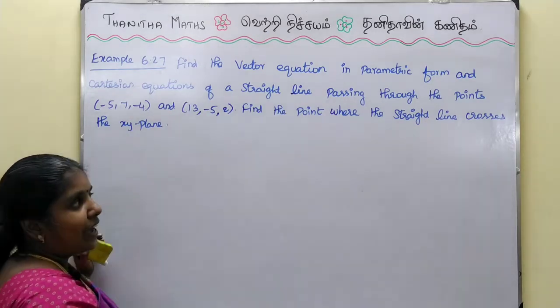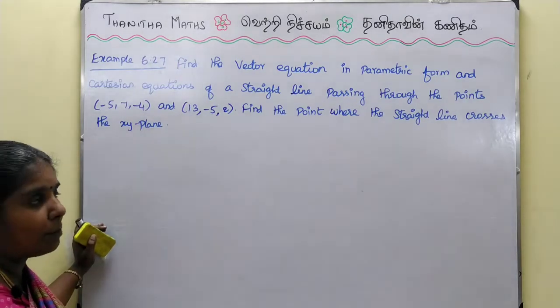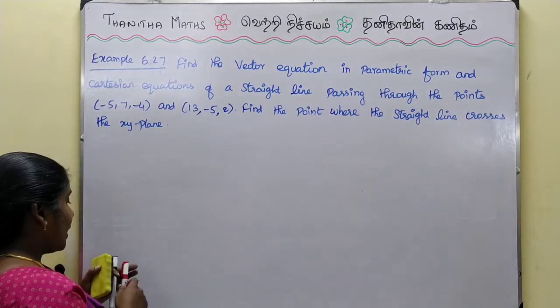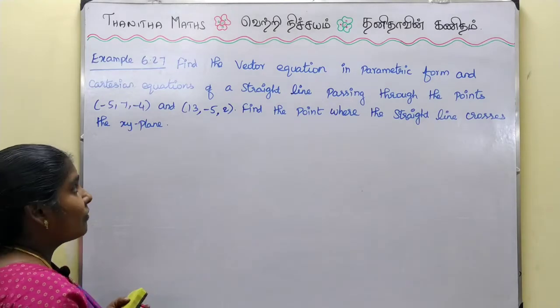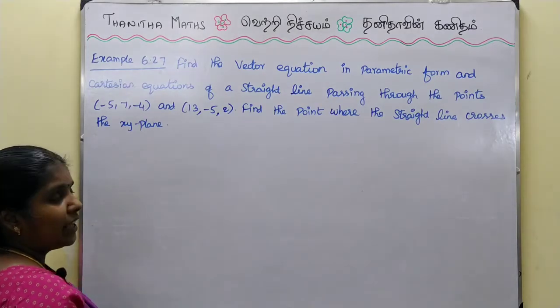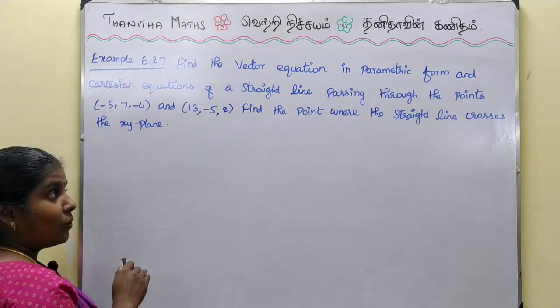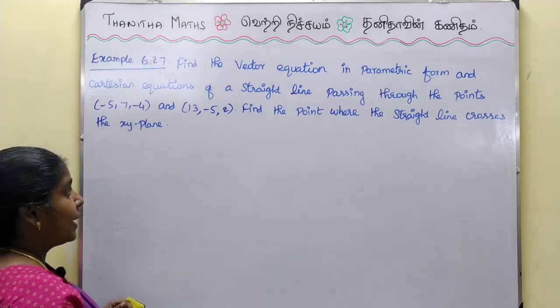Find the point where the straight line crosses the xy plane. We have two points, and the equation of the line is formed using these two points. The vector equation is in parametric form.